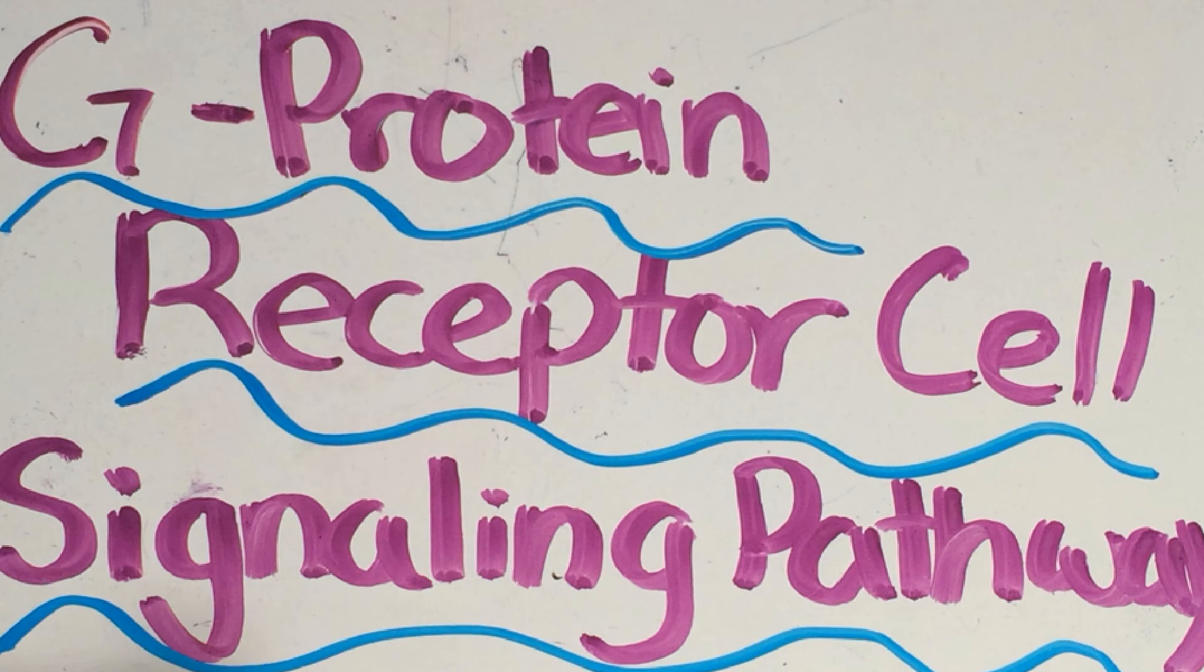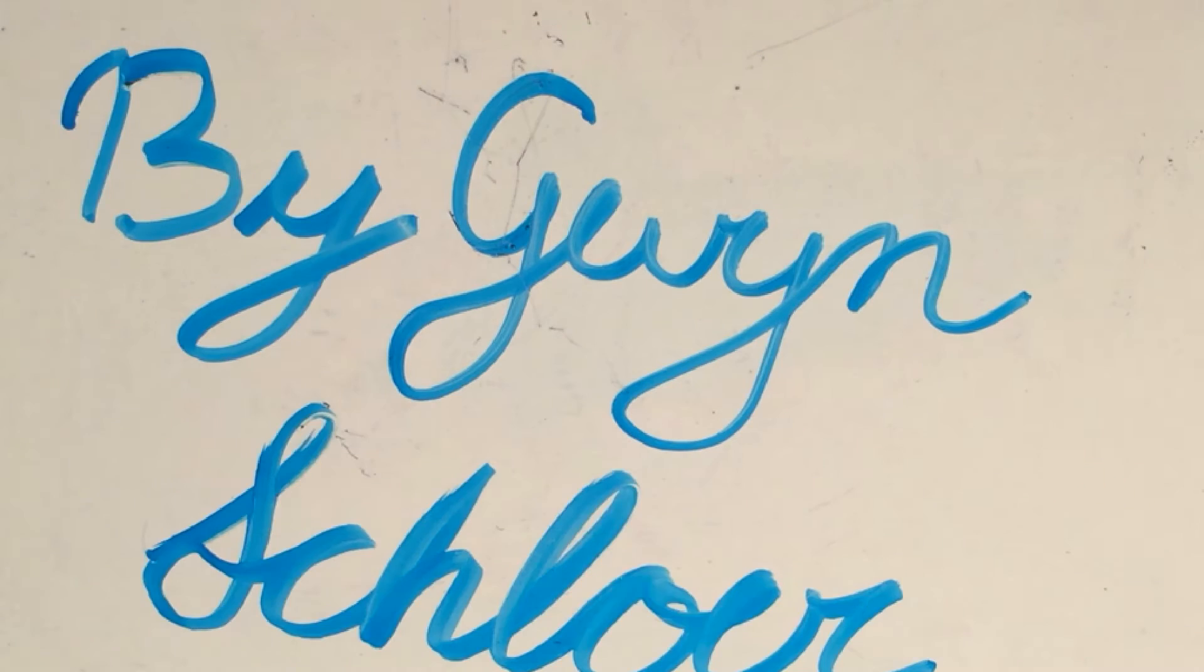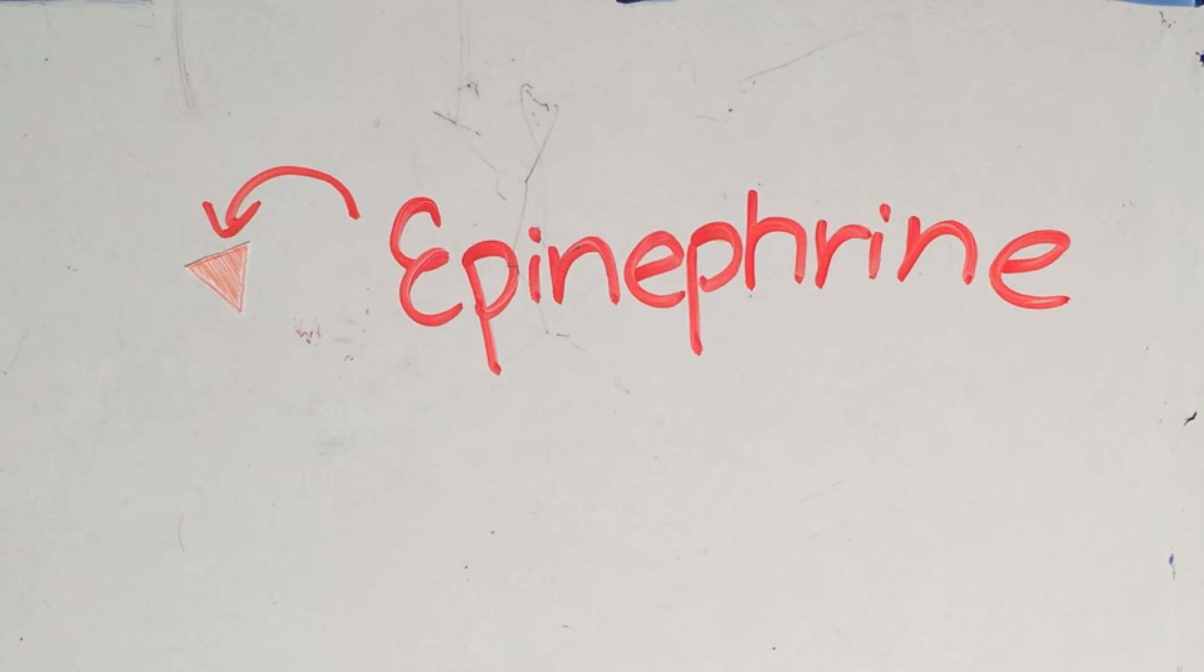The following video describes an example of a G-protein receptor cell signaling pathway. Epinephrine is a hormone commonly associated with the fight-or-flight response.